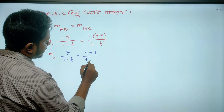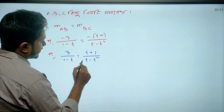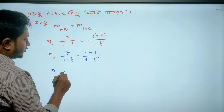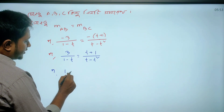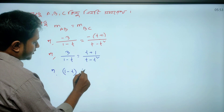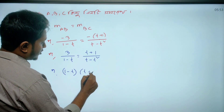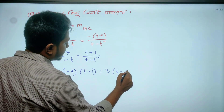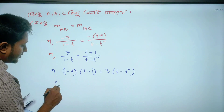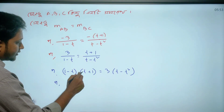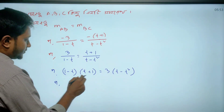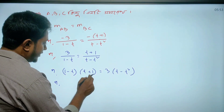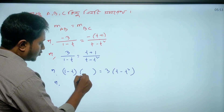Then: 1-t, t plus 1, and 3t minus t — 1-t, 1-t. So 2-t, 1-t.